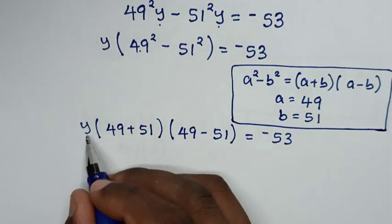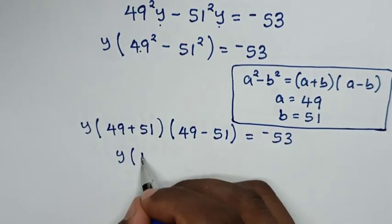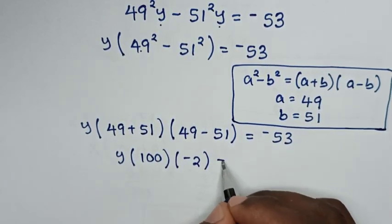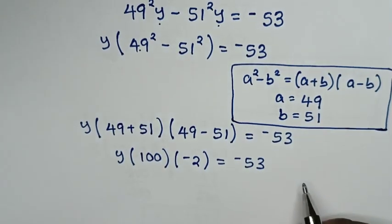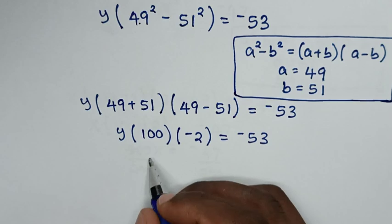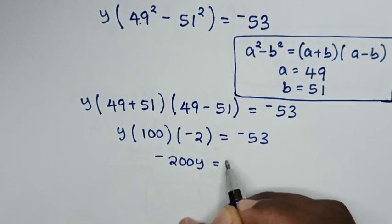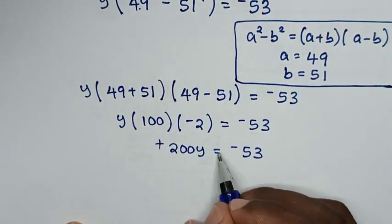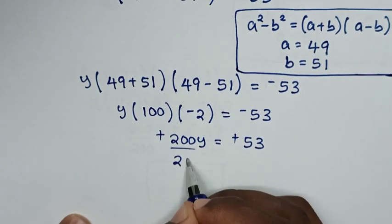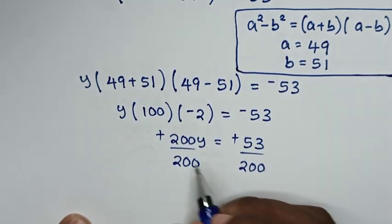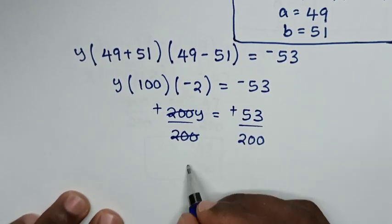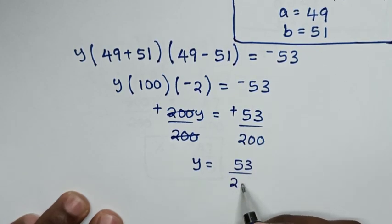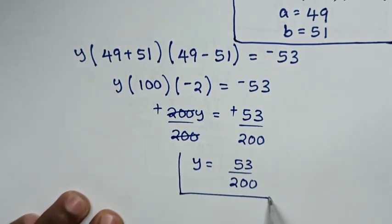Then, our equation becomes y times 100 times negative 2 equals negative 53. So negative 200y equals negative 53. Negative times negative gives positive, so we divide both sides by 200. Then y is equal to 53 over 200. This is the final answer for the value of y.